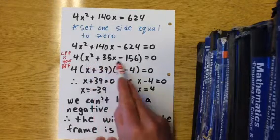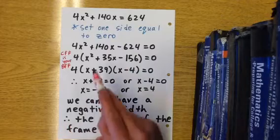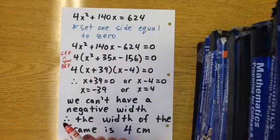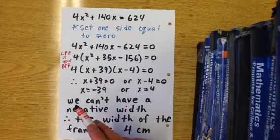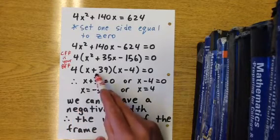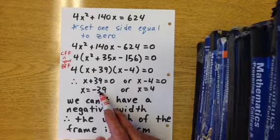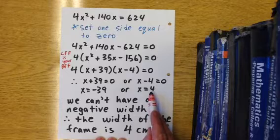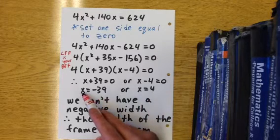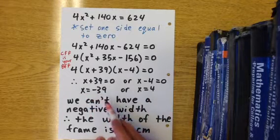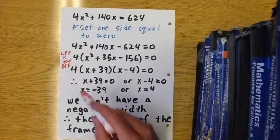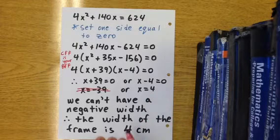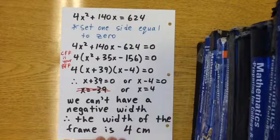Now, we want to see if we can factor this trinomial. Two numbers that add to 35 and multiply to negative 156 are positive 39 and negative 4. Setting these factors equal to zero gives us x equals negative 39 or x equals 4. We cannot have a width of negative 39, so that's an extraneous root. Therefore x is 4, meaning the width of the frame is 4 centimeters.